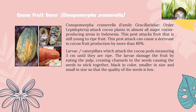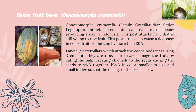The second pest is the cocoa pod borer, or Conopomorpha cramerella. It attacks cocoa plants in almost all major cocoa-producing areas in Indonesia. This pest attacks fruit from young to ripe stages and can cause a decrease in cocoa fruit production by more than 80%. Larvae attack cocoa pods measuring 3 cm until they are ripe, damaging the fruit by eating the pulp and creating channels to the seeds, causing seeds to stick together, turn black, and decrease in size and quality.